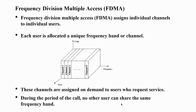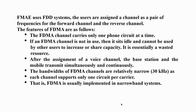This is the concept of frequency division multiple access. The channels are assigned on a demand basis — whoever requests the service, that particular user is allocated that particular frequency. During the period of a call, no other user can share the same channel or same frequency band. Normally FDMA uses an FDD system — frequency division duplexing — which uses a different frequency for the uplink and downlink, meaning different frequencies for transmitting and receiving information.